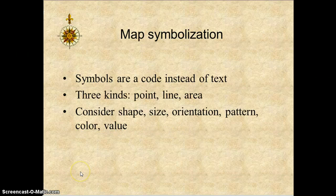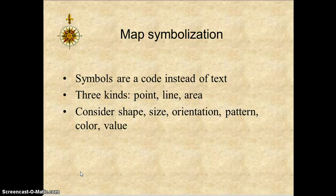Next is map symbolization. Symbols are code instead of text. There are three kinds: point, line, and area. When considering symbols, you look at shape, size, orientation, pattern, color, and value.